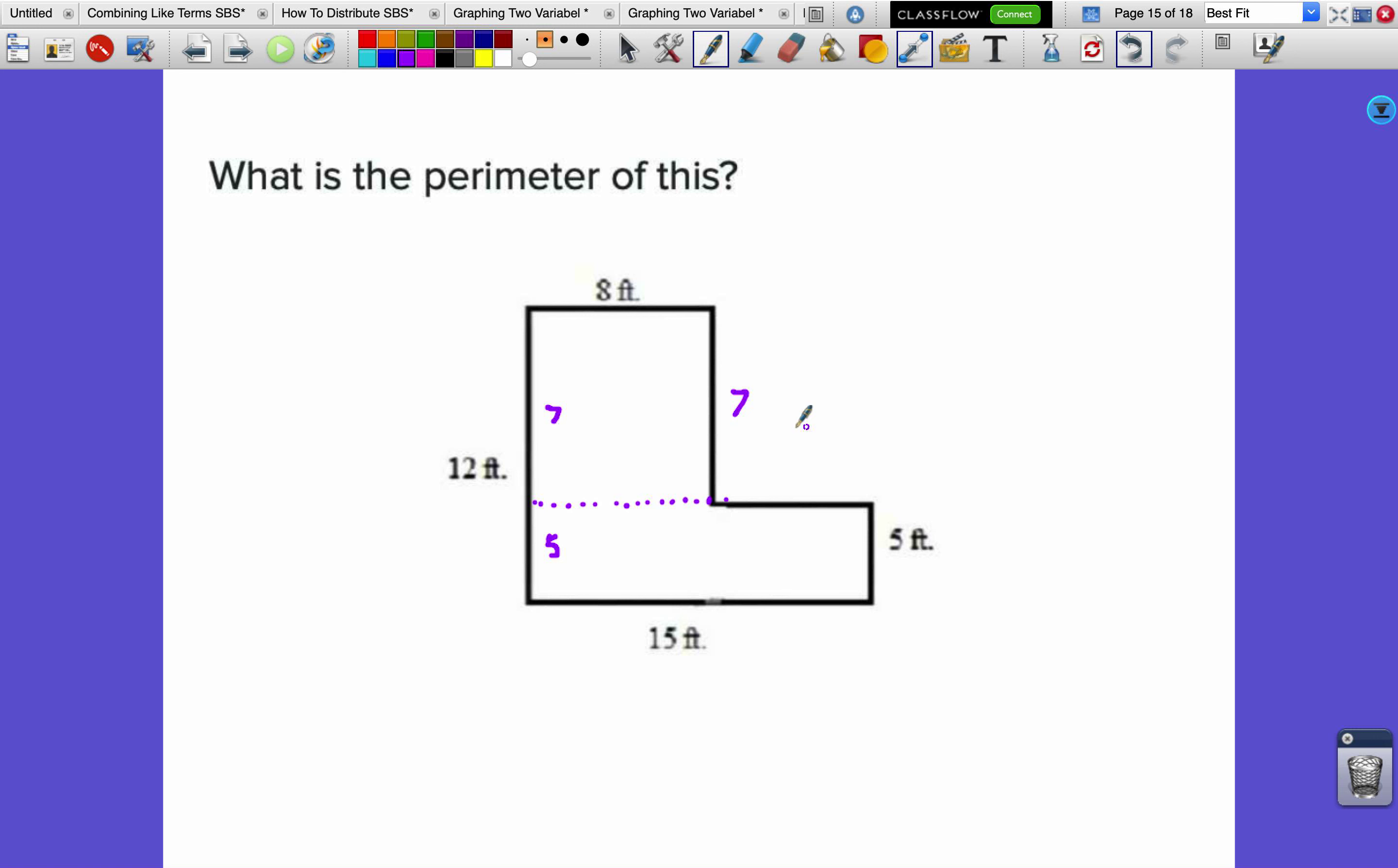Now let's do the other one. If this is 8, then this dotted line must be 8, and this dotted line plus this missing section have to add up to 15. So this length here must also be 7 because 8 and 7 make 15.